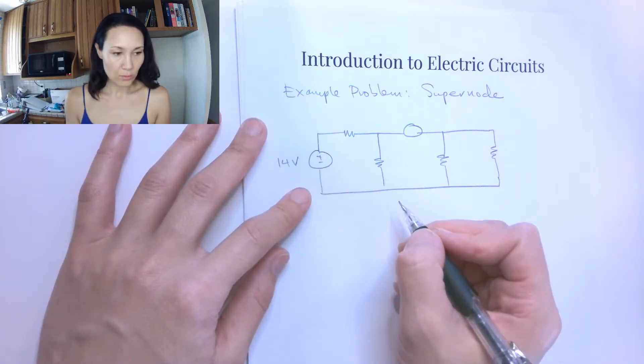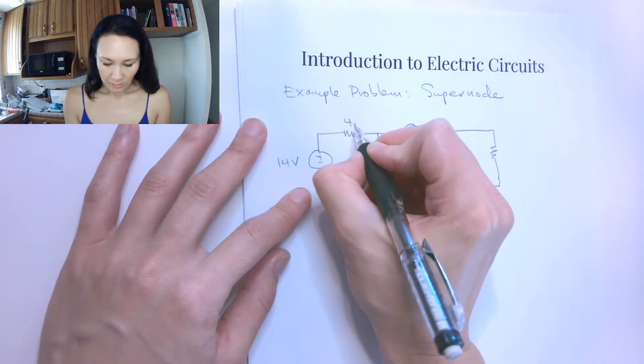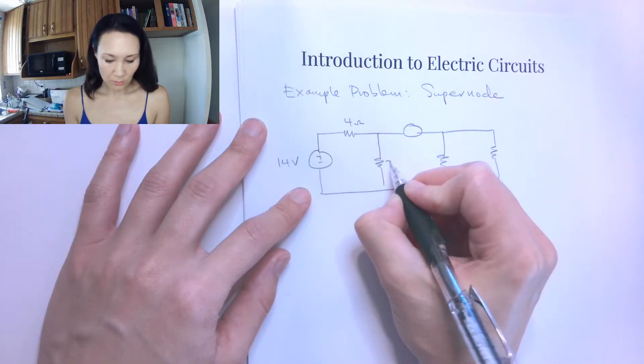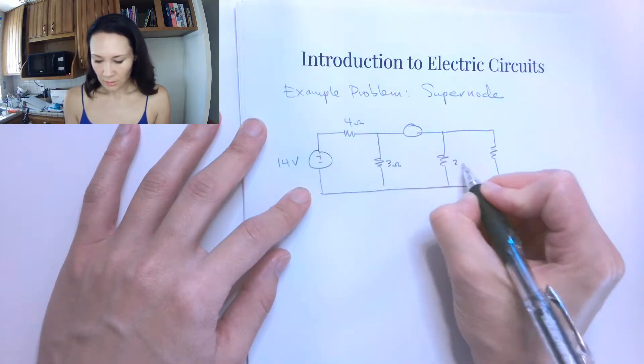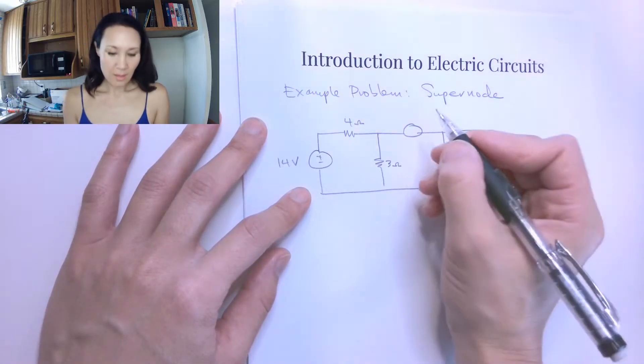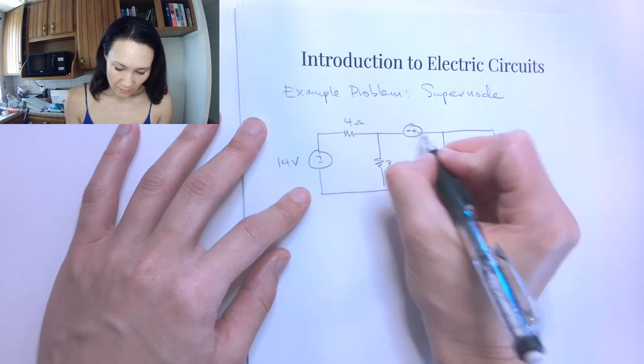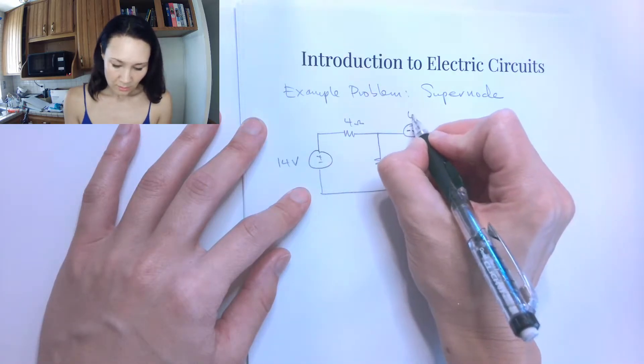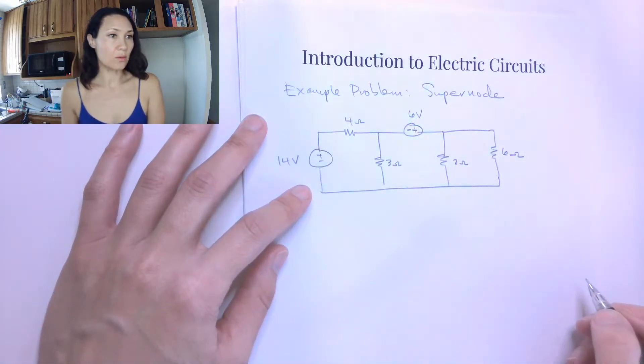Let's let this source be 14 volts. We'll let this be a 4 ohm resistor. Suppose this is a 3 ohm resistor. Suppose this is a 2 ohm resistor, and let's let this be 6. This source up here at the supernode, let's suppose this is a 6 volt source.